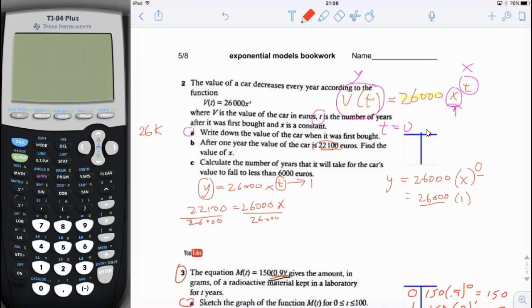And I'm going to get x is equal to 22,100 divided by 26,000. I'm going to do that with the calculator. 26,000 divided by 22,100. You get 1.18.